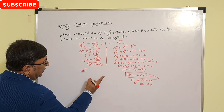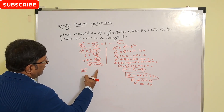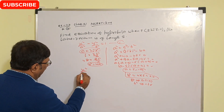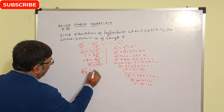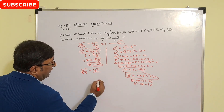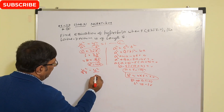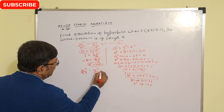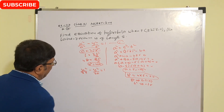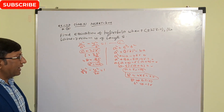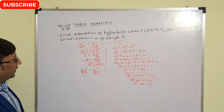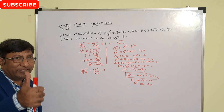Therefore the equation of hyperbola is x² / a² − y² / b² = 1. Here a = 5 so a² = 25, and b² = 20. Our final answer is x² / 25 − y² / 20 = 1.